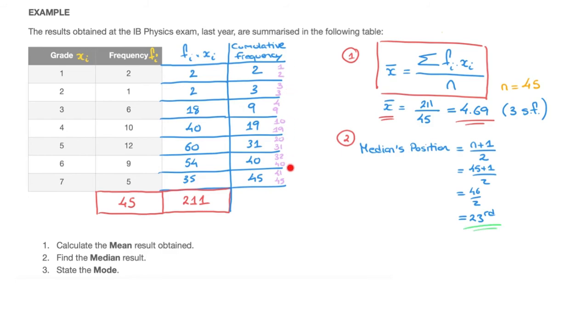Looking back at our cumulative frequency columns and the numbers on the right hand side, I quickly see that the 20th to 31st value fall inside this row here. Consequently, the 23rd value is somewhere there. That tells us the median equals 5.